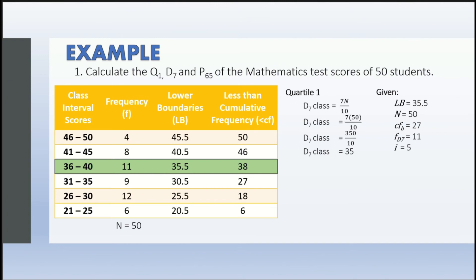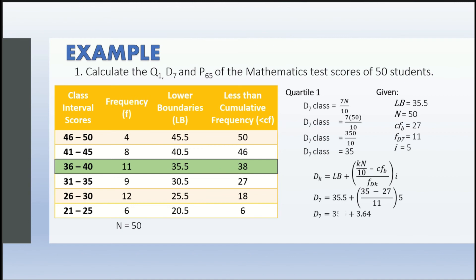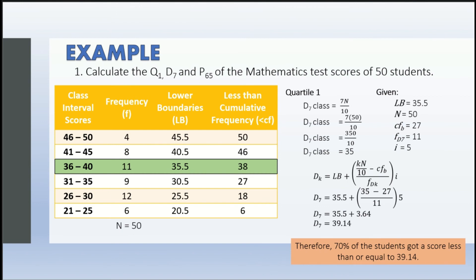We substitute into the decile formula: D sub k = lb + [(kn/10 − cf sub b) / f sub Dk] × i. So we have 35.5 + [(35 − 27) / 11] × 5 = 35.5 + 3.64 = 39.14. Therefore, 70% of the students get a score less than or equal to 39.40.